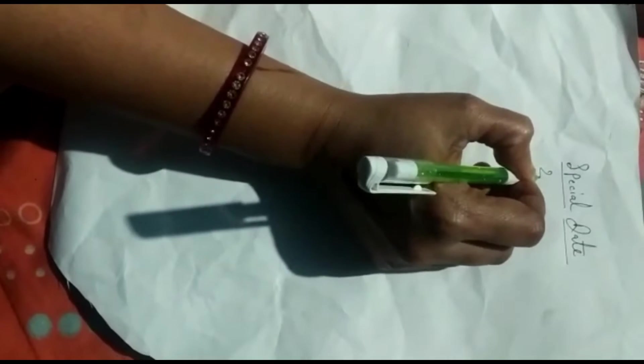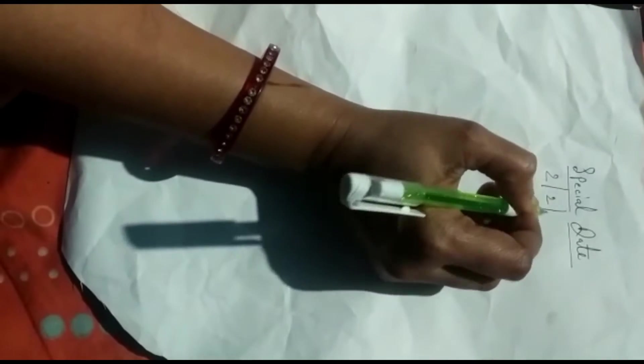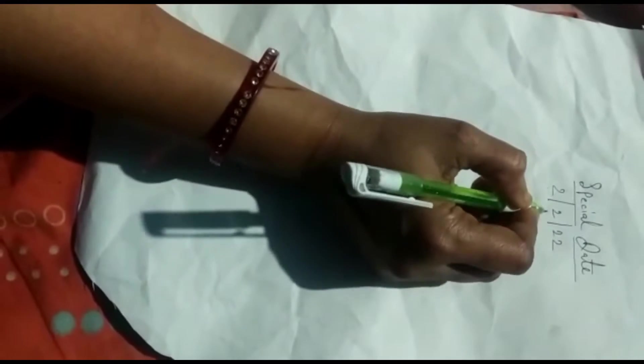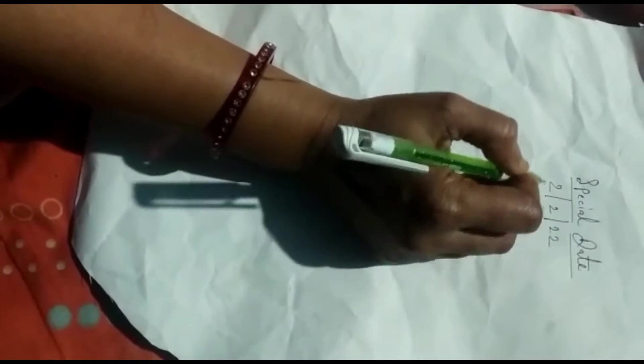So, what is today's special date? 2, 2 and double 2. That means date, month and year. These 3 are the same.